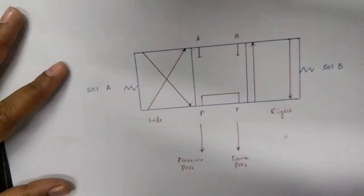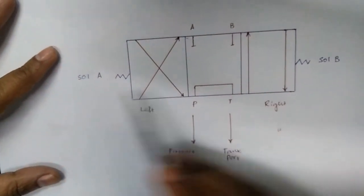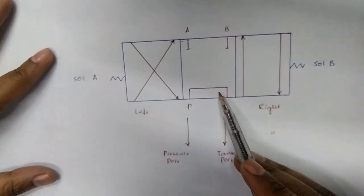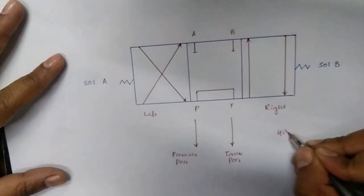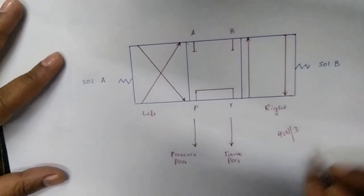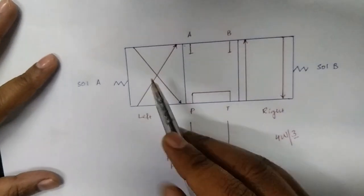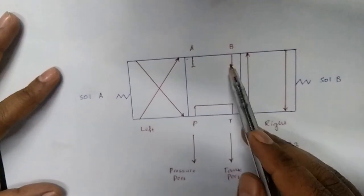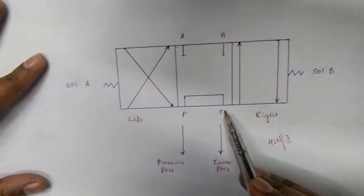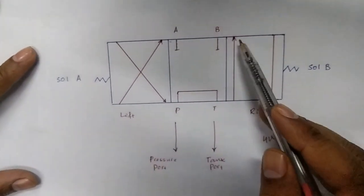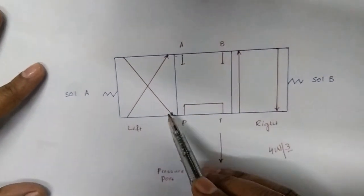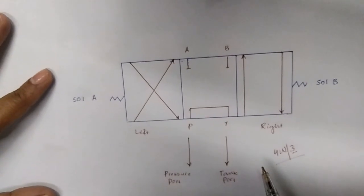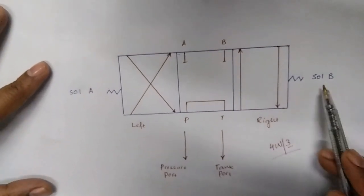On the left side we have solenoid valve A, and on the right side we have solenoid valve B, and there is a neutral position in the center. It's a four-way three-position valve — we have three positions: left, middle, and right. We have four ports: A, B, P, and T.